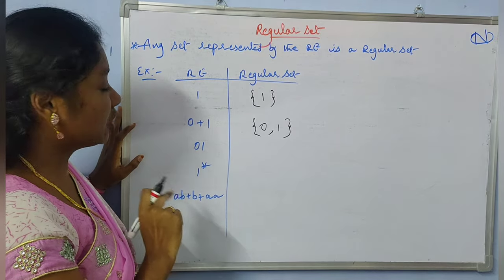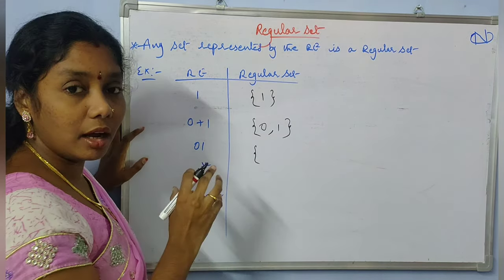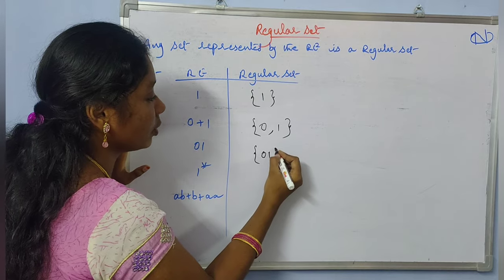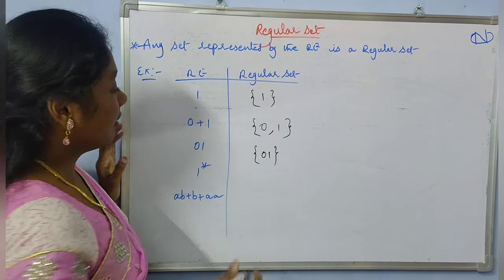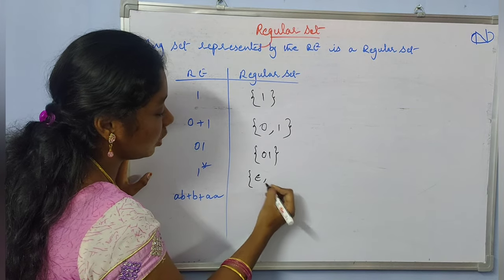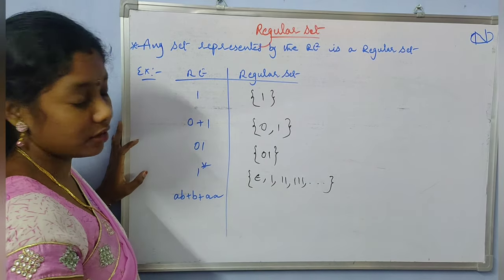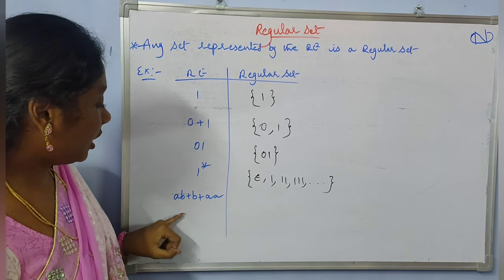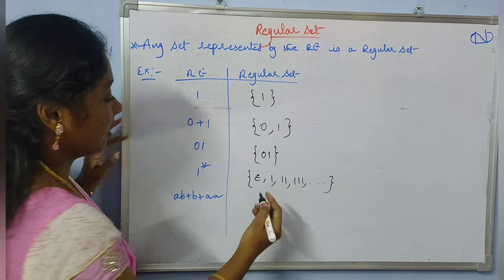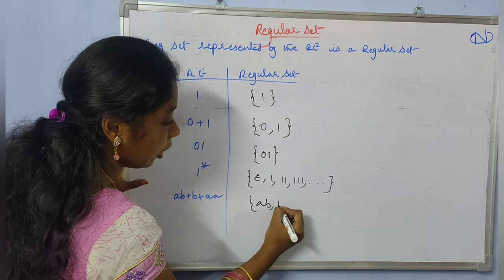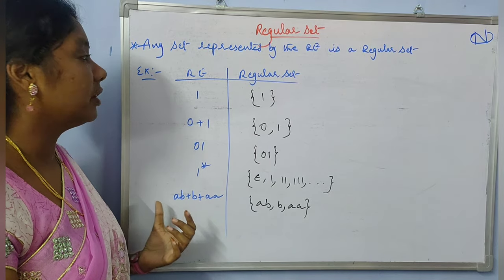And here there is only one string, 01, which is expressed with the help of a regular expression, so the regular set contains only 01. Coming to 1*: 1* is a regular expression, and the strings coming under 1* are epsilon, 1, 11, 111, and so on — all these strings belong to the regular set. For this particular regular expression, it says the strings should be AB, or B, or AA. So the set consists of AB, B, and AA. In this way, we can form regular sets from a given regular expression.